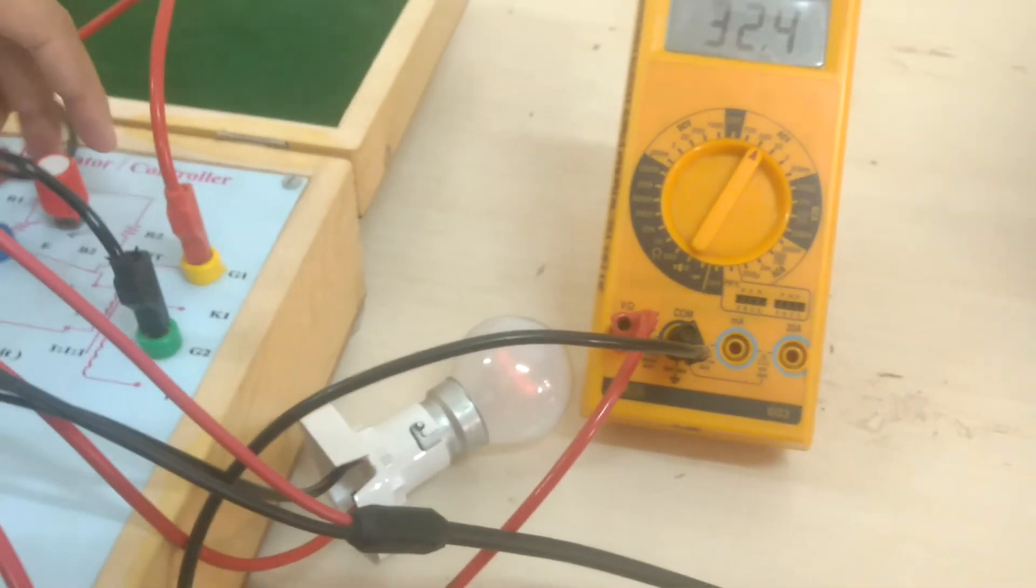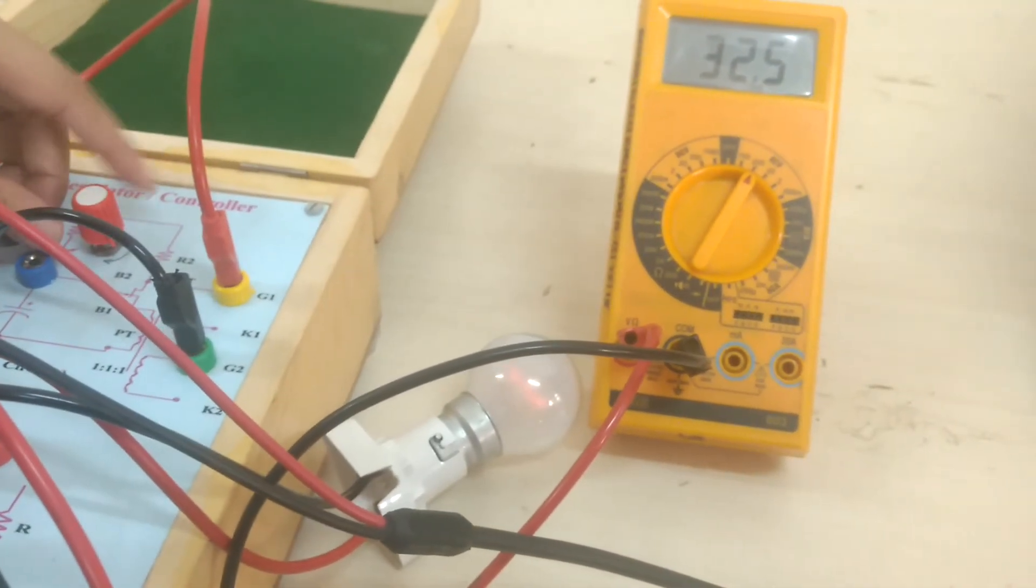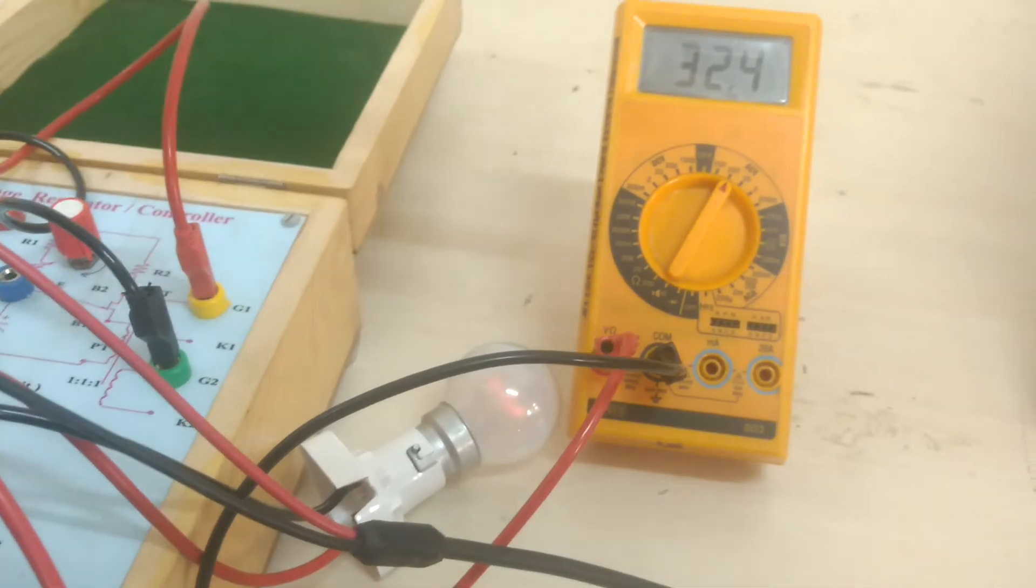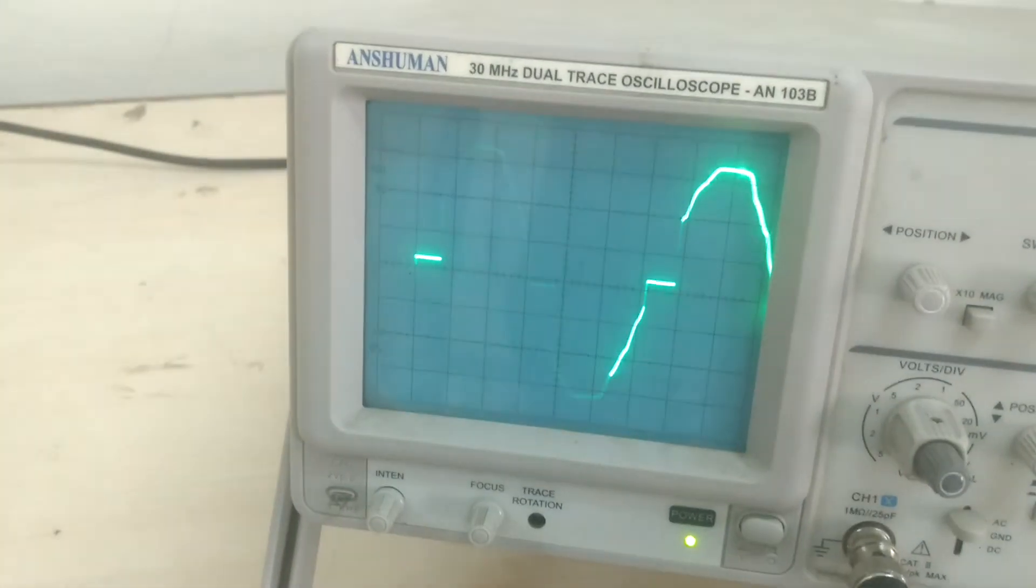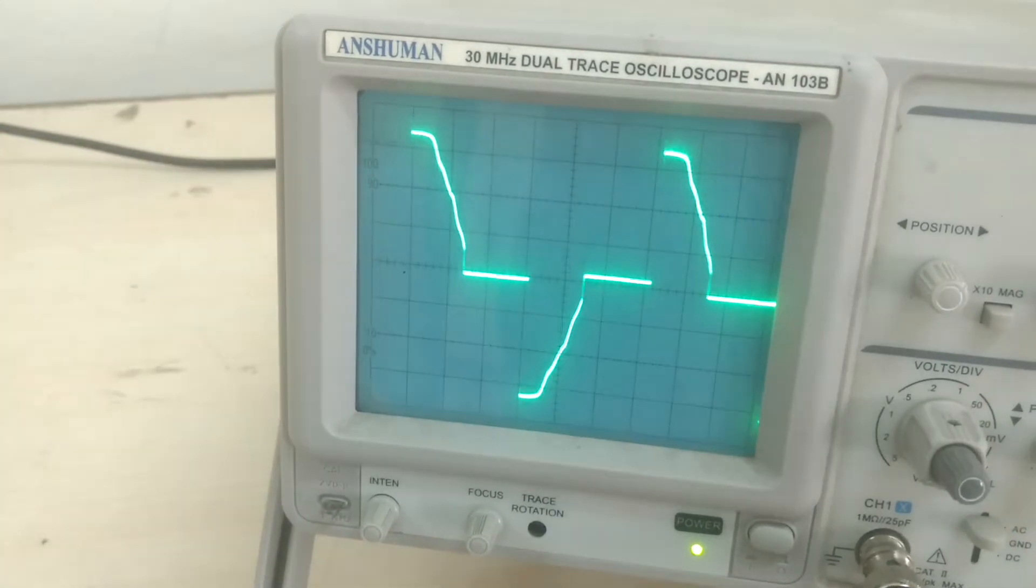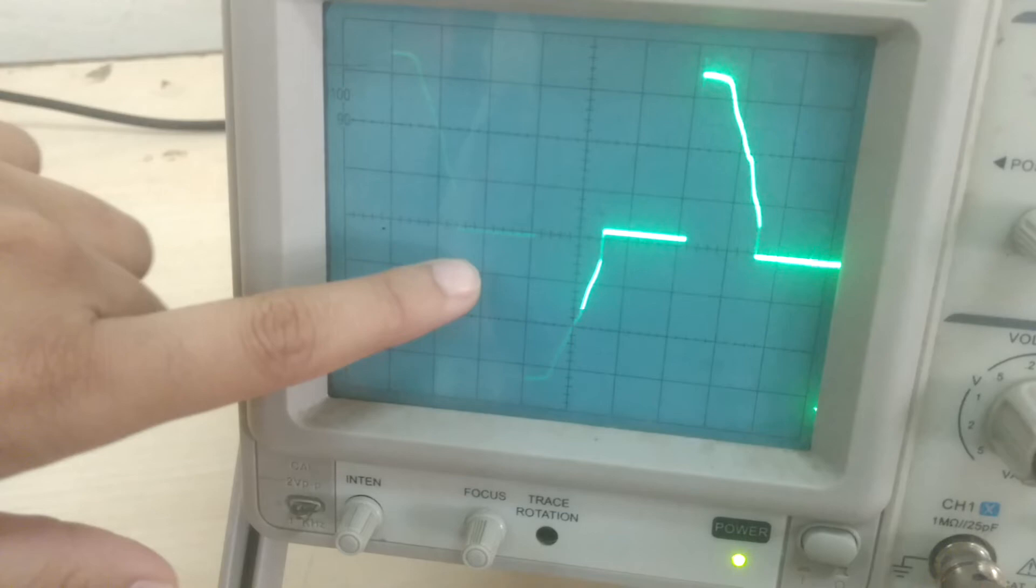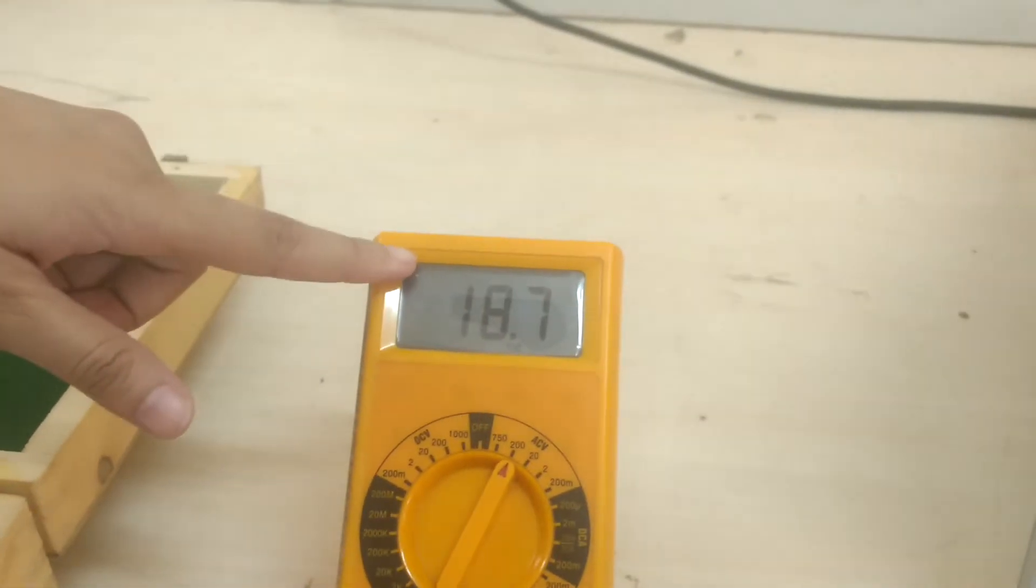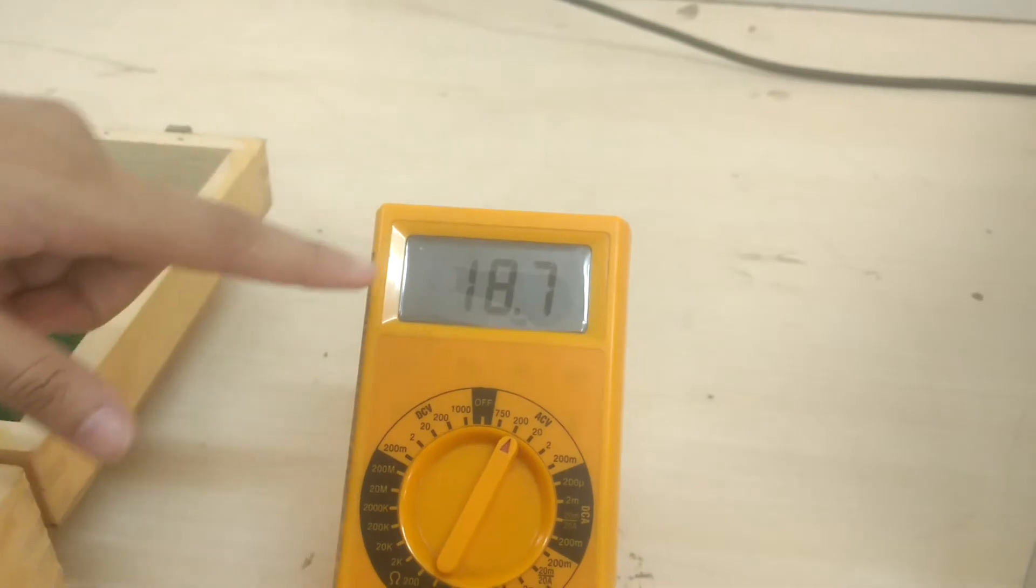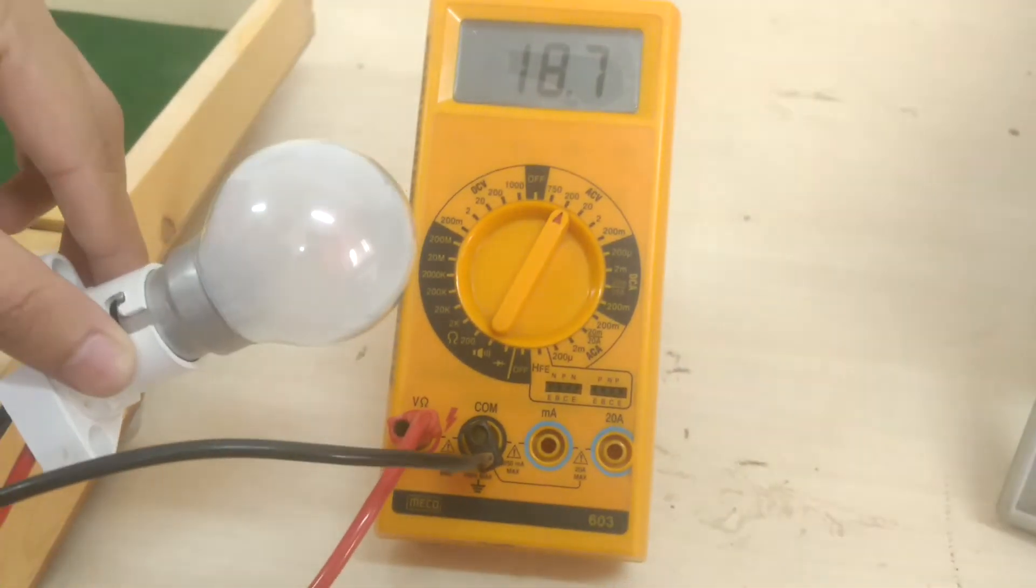Now we will increase the alpha with the help of this knob. You can observe the changes in the waveform when I increase the alpha. When I increase the alpha, this area will increase. For this alpha, the output voltage is reduced to 18.7 volts and brightness of the lamp is also reduced.